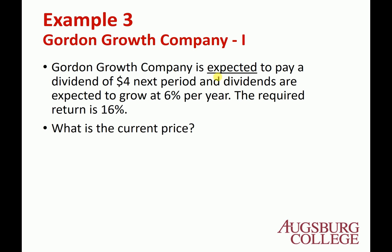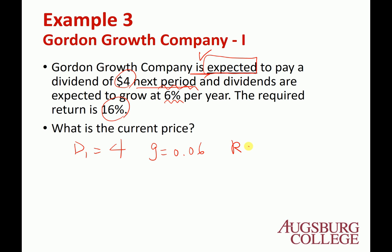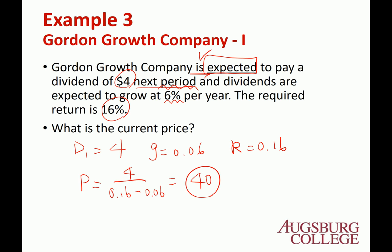Example 3 — Golden Gross Company is expected to pay a dividend of $4 next period. Dividends are expected to grow 6% per year. The required rate of return is 16%. Since $4 is the next period dividend, D1 = $4. P = D1 / (R − G) = $4 / (16% − 6%) = $40.